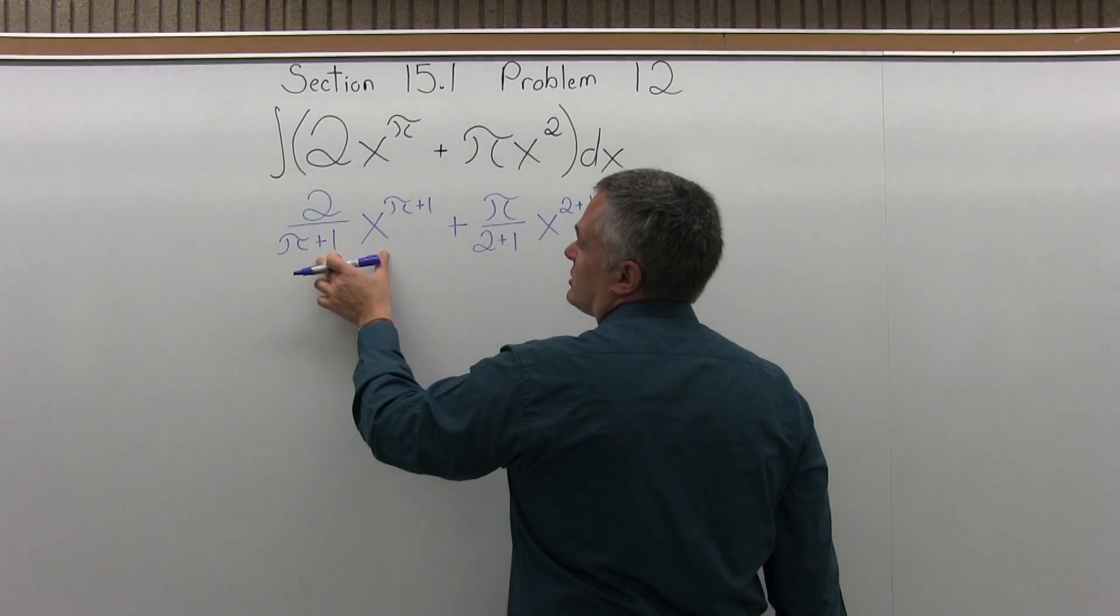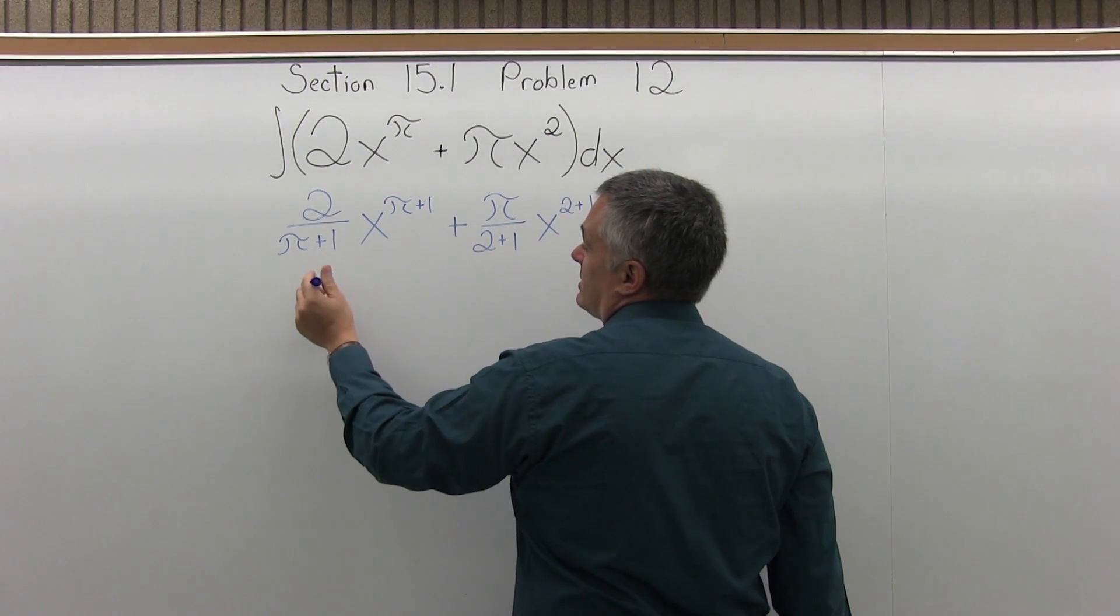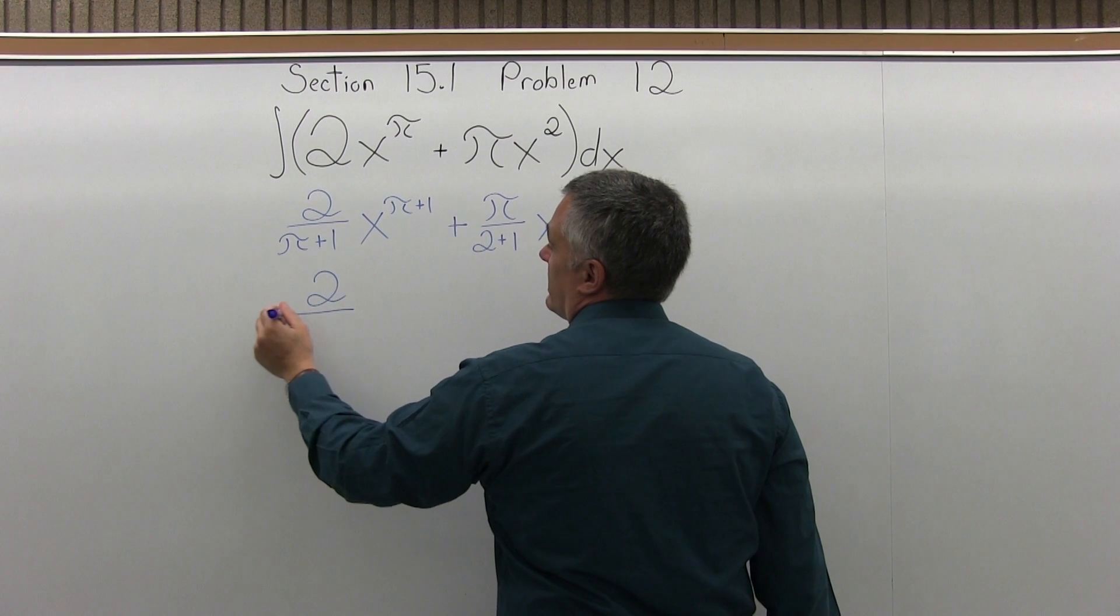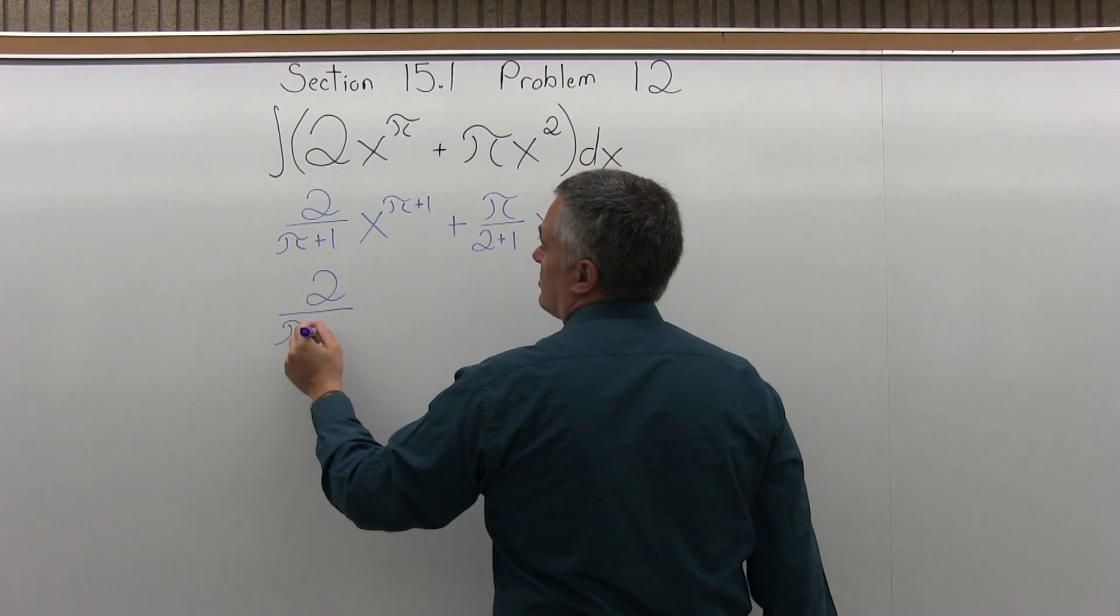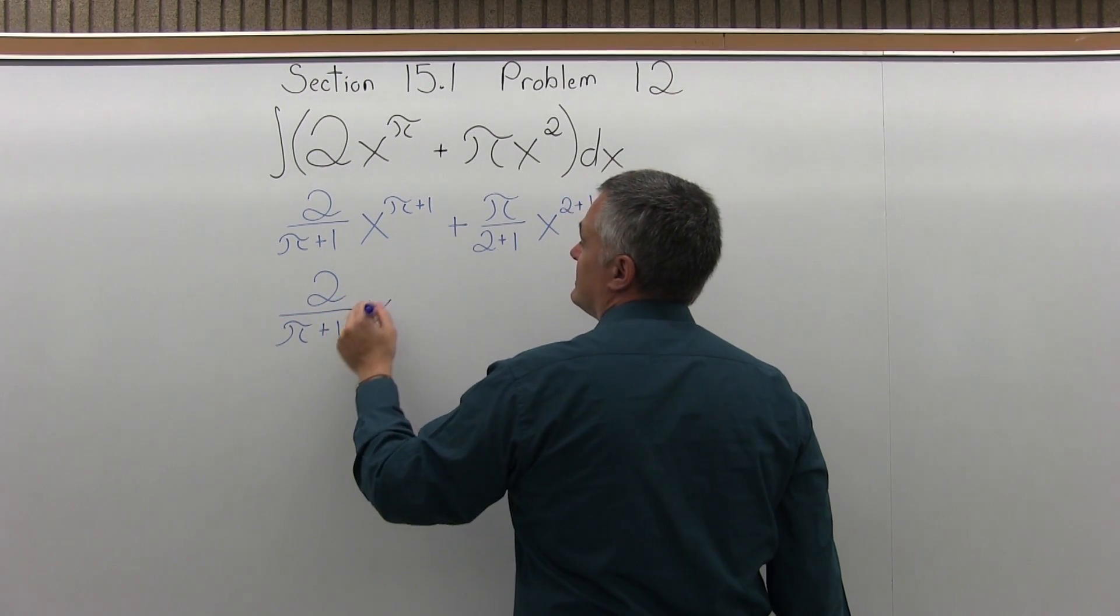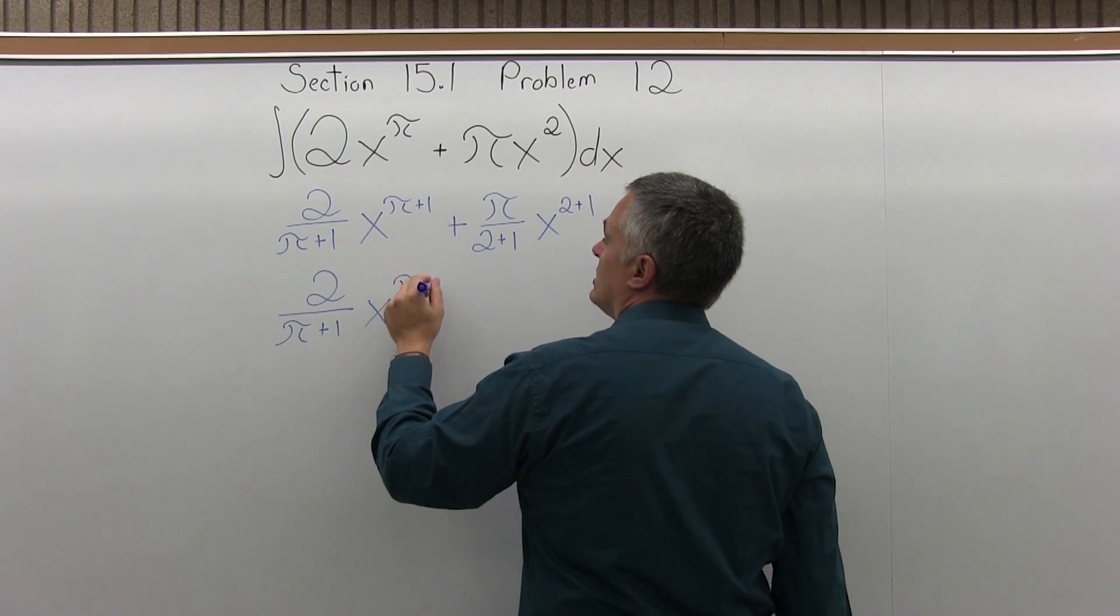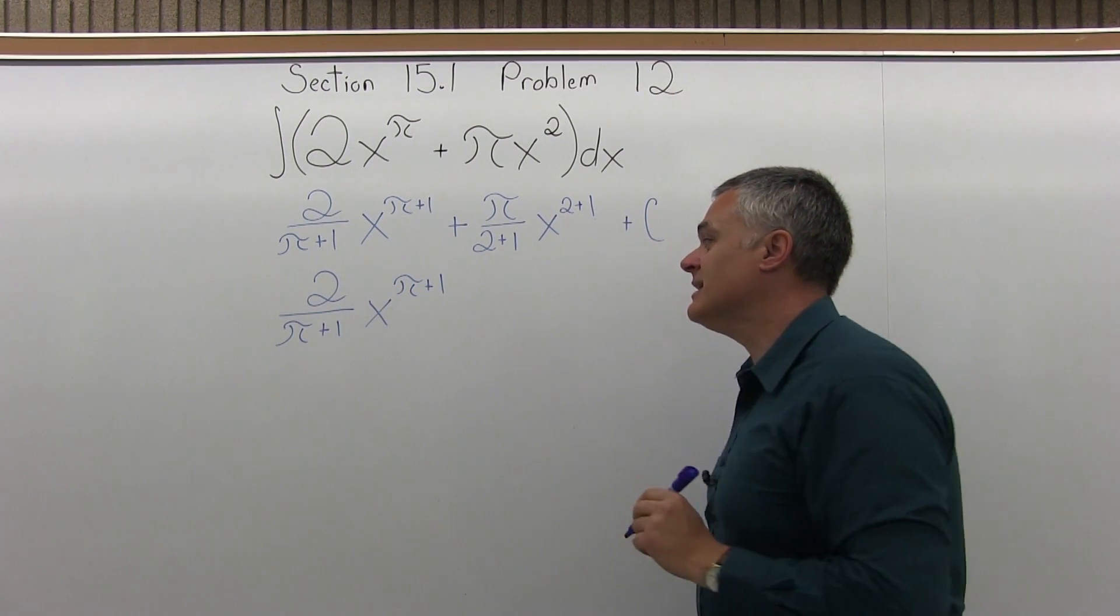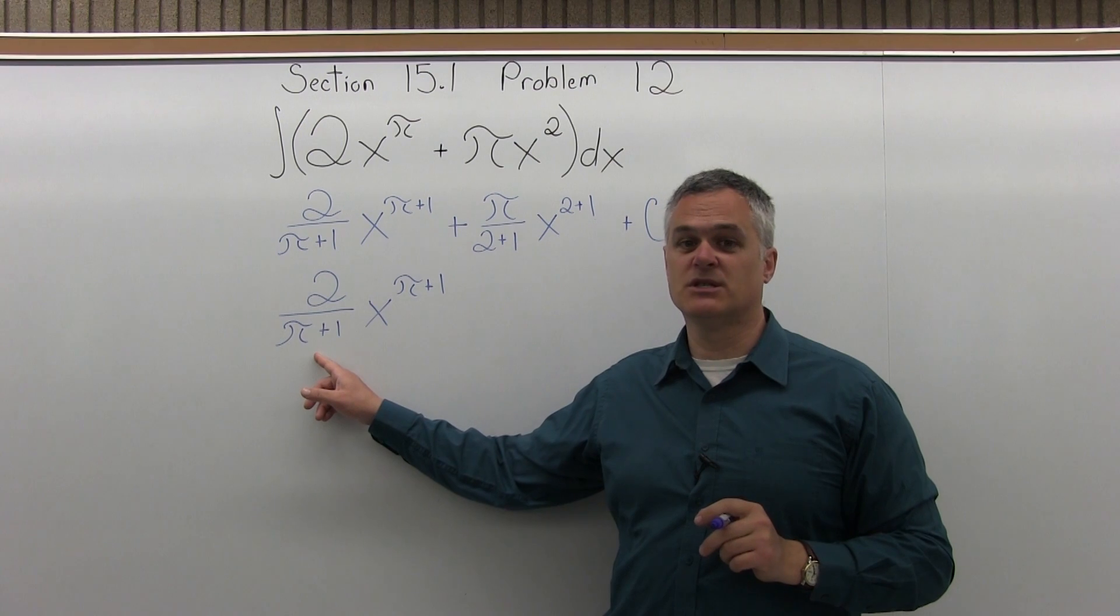Now, the first piece of our answer, 2 over pi plus 1, x to the pi plus 1, unless you want to get into decimals and put in the 3.14 for pi, it's not going to simplify that much. And a lot of books will just leave the pi in the answer, so you can have as much accuracy as you want.